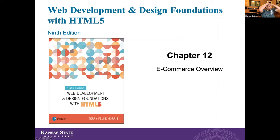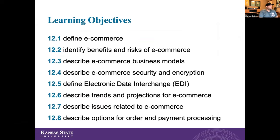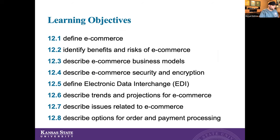Let's start with chapter 12, which covers e-commerce. We'll talk about what e-commerce is, the benefits and risks, the business models, security and encryption information, trends and projections, and then ordering and payment processing - kind of how that works.